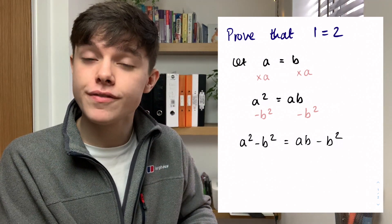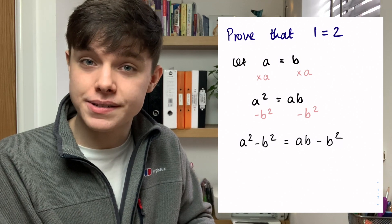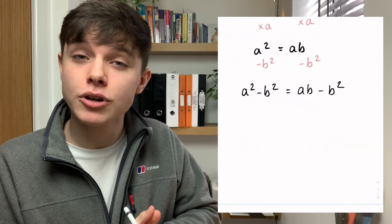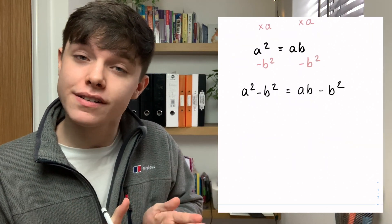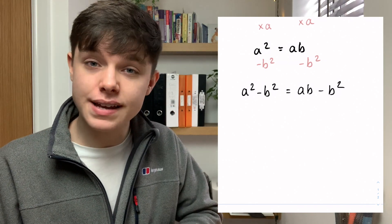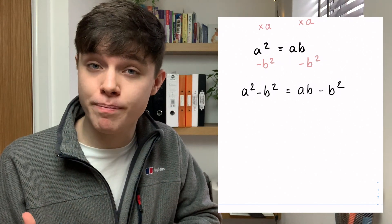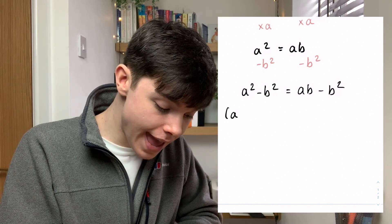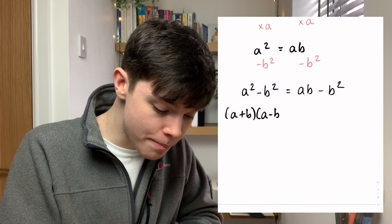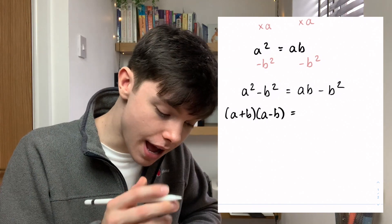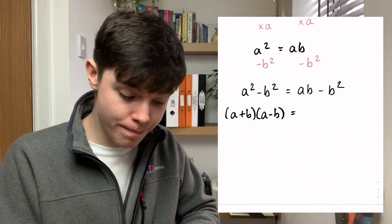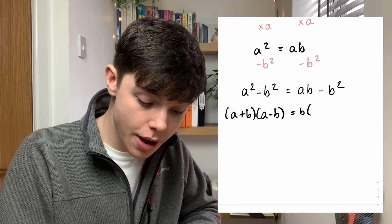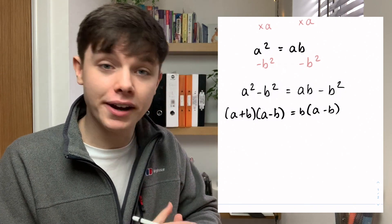Now what I'm going to do is I'm going to factorize both sides. On the left hand side I'm going to do the difference of two squares and on the right hand side I'm just going to take out a factor of b. So the difference of two squares on the left hand side will be (a + b)(a - b). On the right hand side I'm going to end up with b multiplied by (a - b).